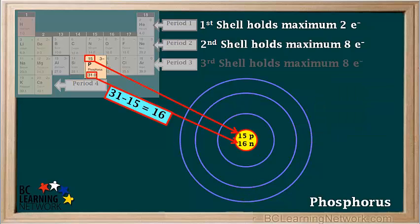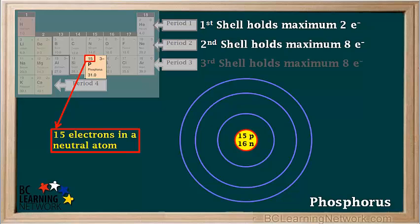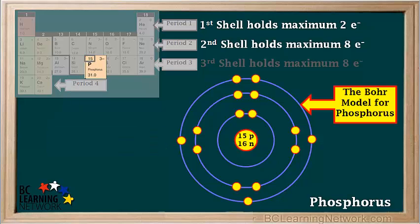Phosphorus has 15 protons and 31 minus 15, which equals 16 neutrons in its nucleus. A neutral phosphorus atom has 15 electrons, which can be arranged like this. So this is the Bohr model for phosphorus. Notice it has one lone pair and three unpaired electrons in shell number 3. This is the most useful Bohr model for phosphorus, so it's the one that's usually used.